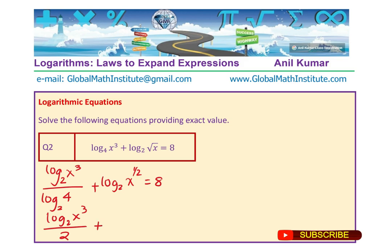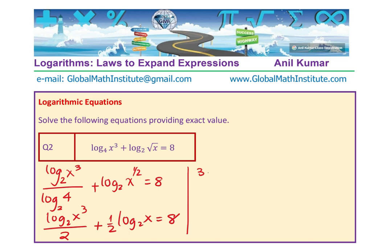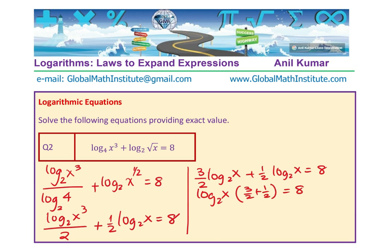Using the power rule, log base 2 of x cubed equals 3 times log base 2 of x, so we have 3 over 2 times log base 2 of x, plus one half times log base 2 of x, equals 8. Combining these terms: log base 2 of x times the quantity 3 over 2 plus one half equals 8. Since 3 over 2 plus one half equals 4 over 2, which is 2, we get 2 times log base 2 of x equals 8.